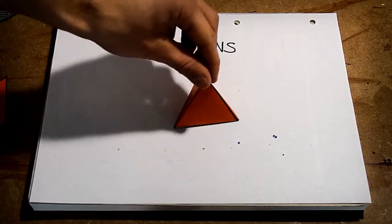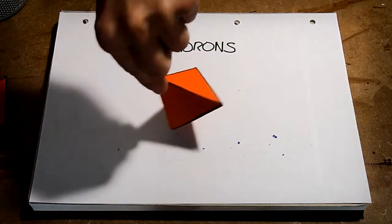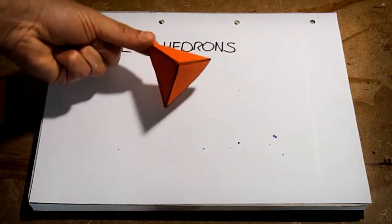A tetrahedron is a four-sided regular polyhedron, and each side is an equilateral triangle. How would I find the surface area of a shape like this?